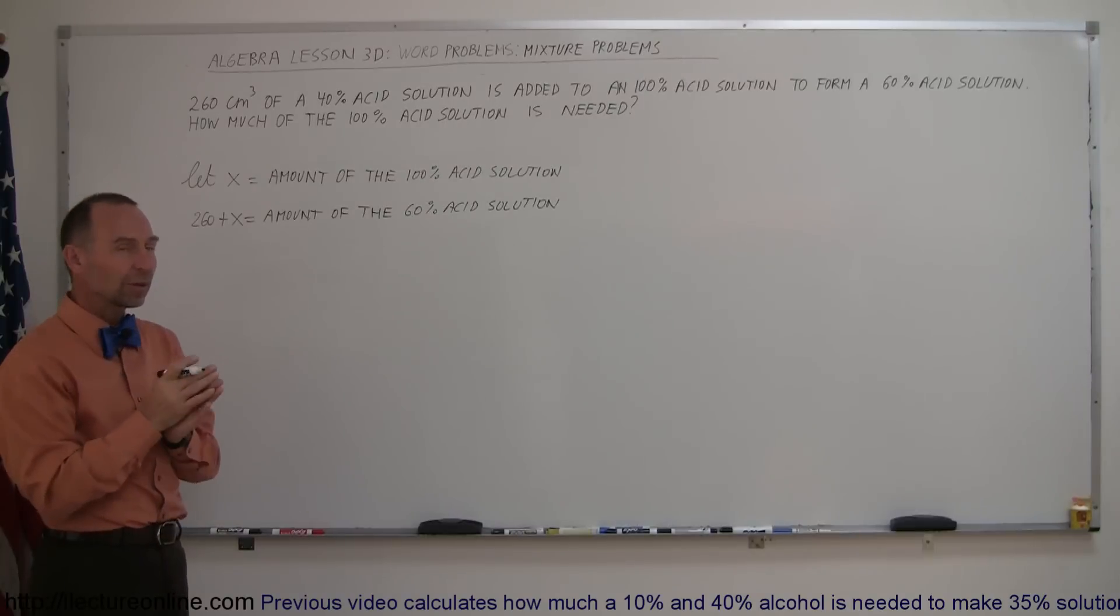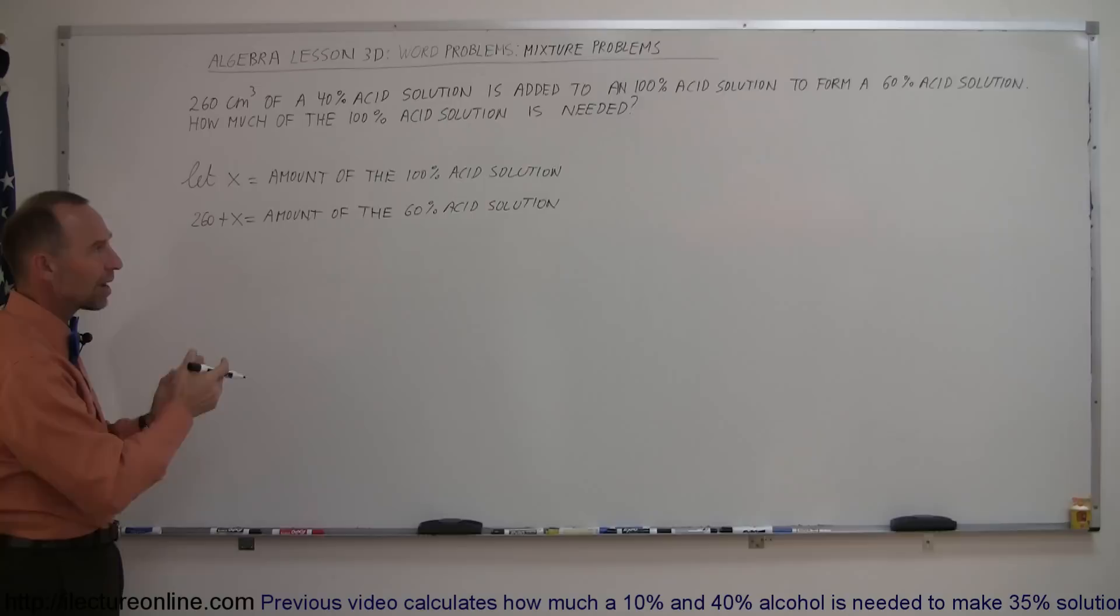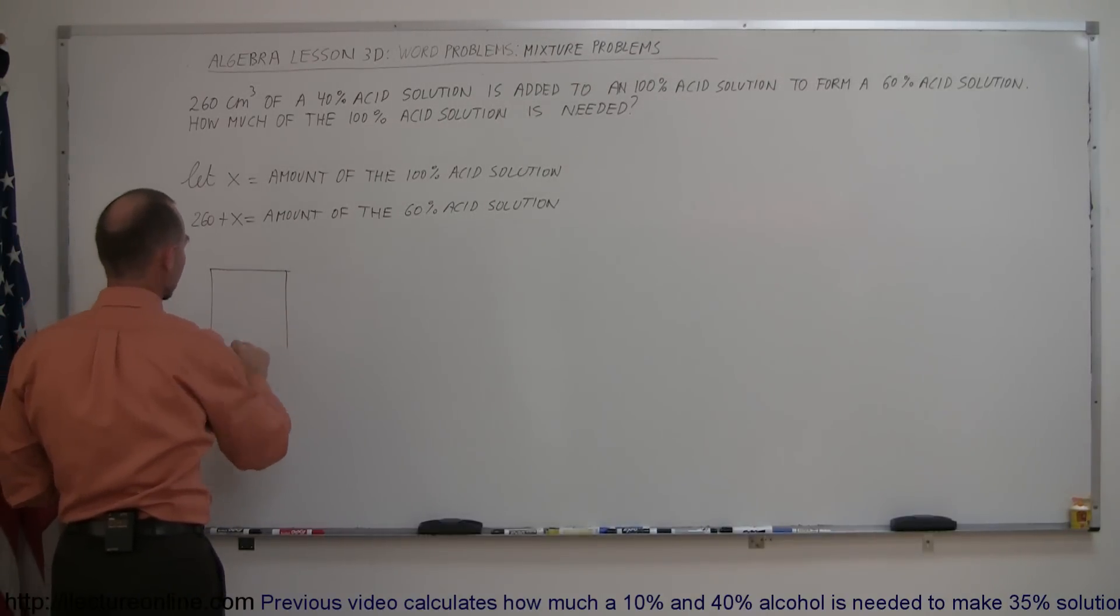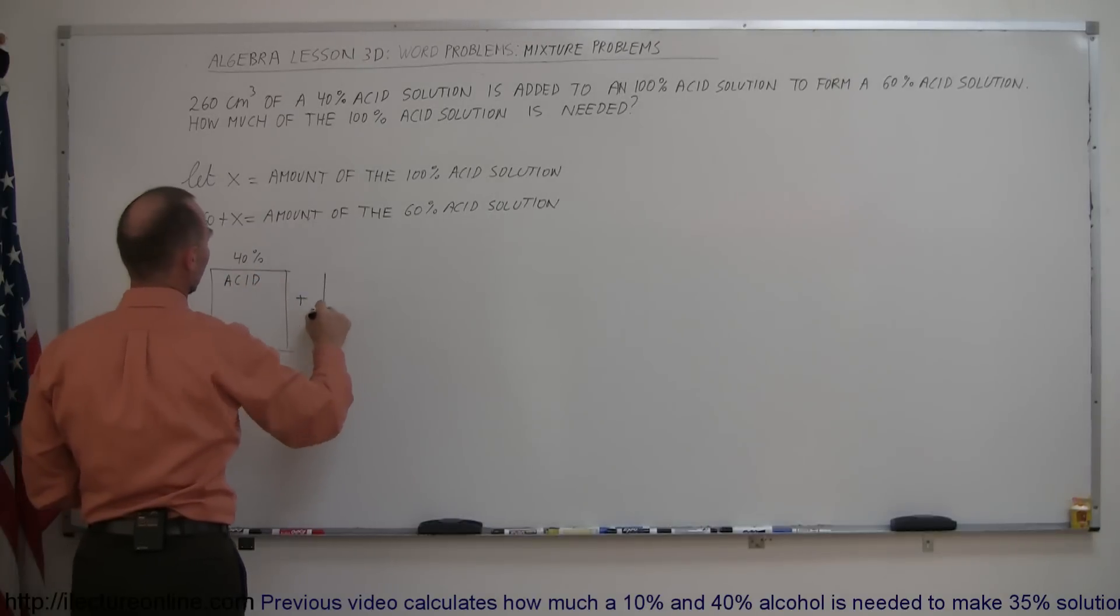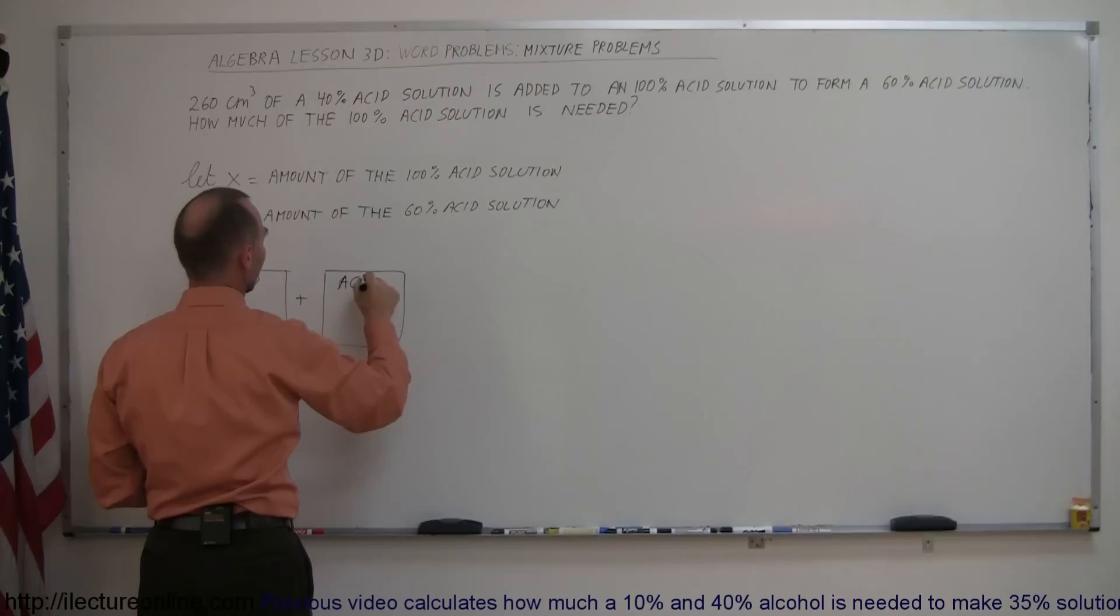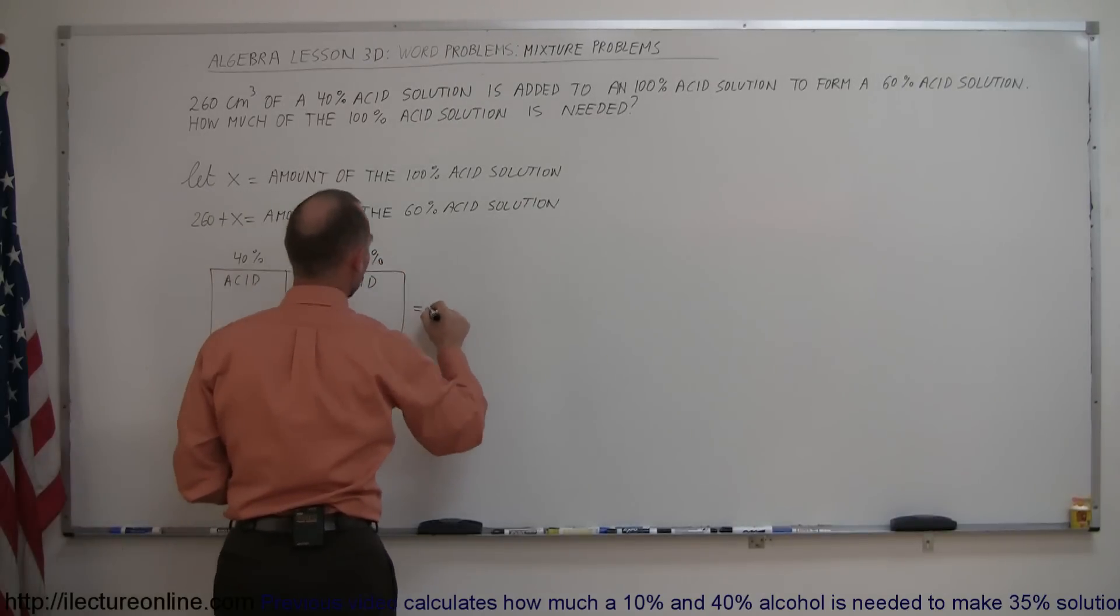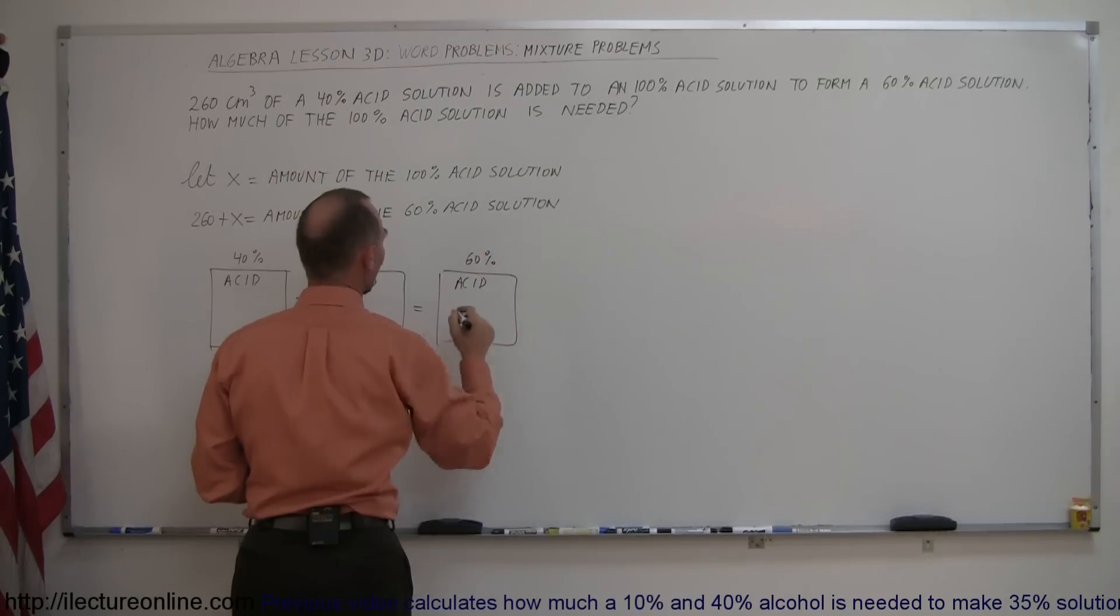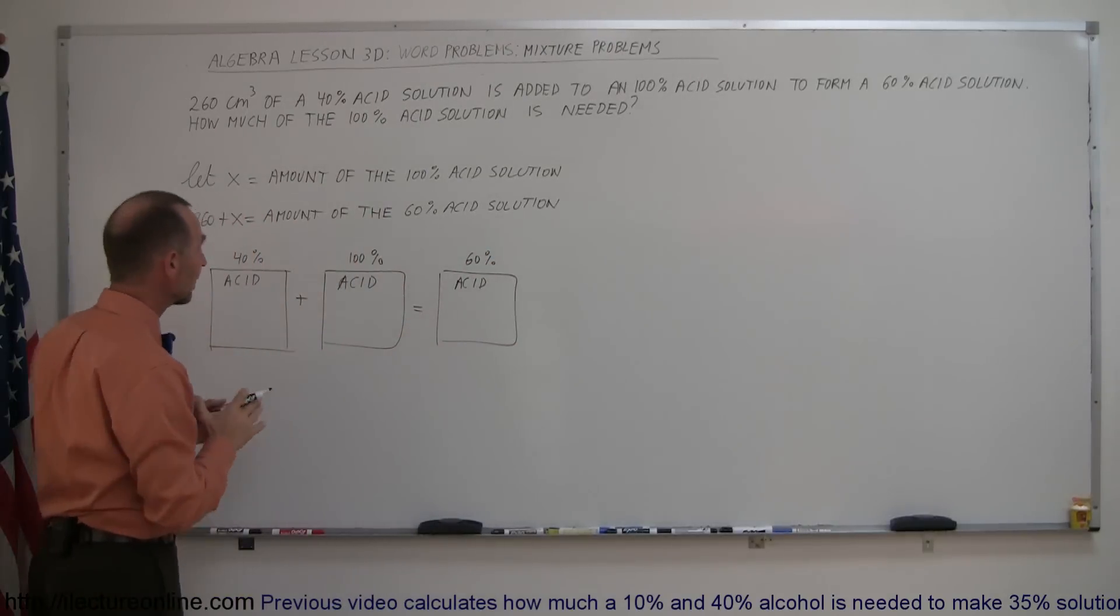The best way to do a mixture problem like this is to keep track of how much acid you have. So we can say that the acid in the 40% solution, plus the amount of acid in the 100% solution, must equal the acid in the 60% solution. Again, keep track of the acid.